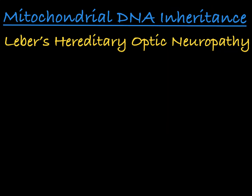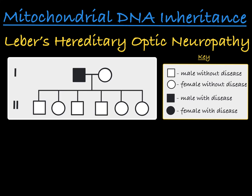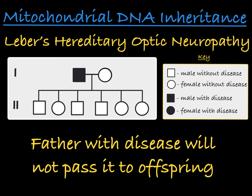Thinking back to the inheritance pattern of Leber's hereditary optic neuropathy, which is associated with a mutation in mtDNA: a mother with the disease who mates with a father without the disease will have sons and daughters with the disease, because their mother passes on her mutated mtDNA to her children through her eggs. Alternatively, a father with the disease who mates with a mother without the disease will have all offspring without the disease, because the father does not pass on his mutated mtDNA to his children.